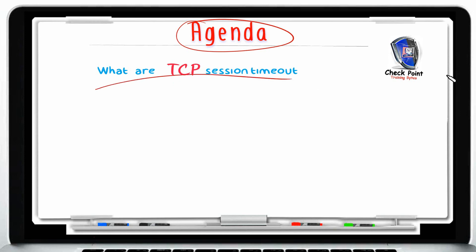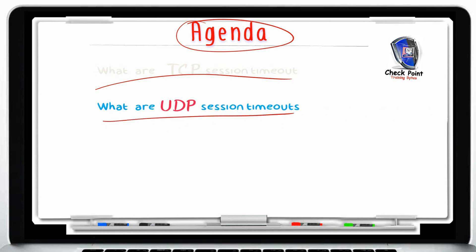First, we will talk about how a Stateful Inspection Firewall keeps the virtual circuit session safe. We will discuss the start and end timeouts of a virtual session and the data transfer session timeouts. Then we will continue with a focus on UDP protocol — how a Stateful Inspection Firewall helps protect a stateless protocol like UDP against mischievous and nefarious sources.